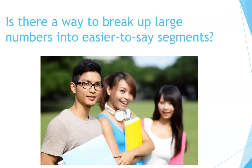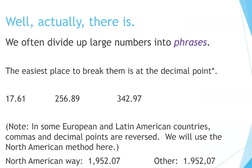Is there a way to break up large numbers into easier-to-say segments? Actually, there is. We often divide up large numbers into phrases. The easiest place to break them is at the decimal point. For example: 17.61, 256.89, 342.97.